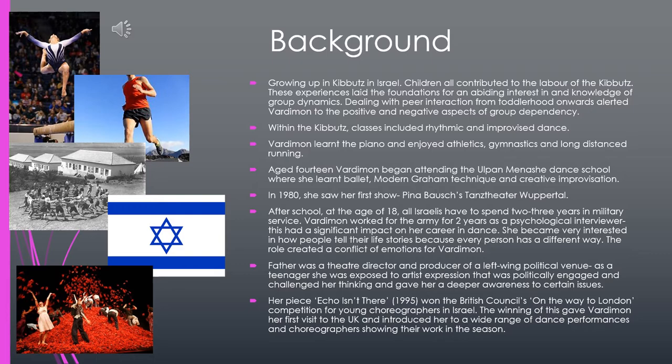Within the kibbutz, classes included rhythmic and improvised dance. She learned to play the piano and enjoyed athletics, gymnastics, and long distance running. At age 14 she began to attend the Olpun Menche Dance School, where she learned ballet, modern Graham technique, and creative improvisation — so she had a really creative upbringing. And in 1980 she saw her first show, which was Pina Bausch's Dance Theatre Wuppertal.